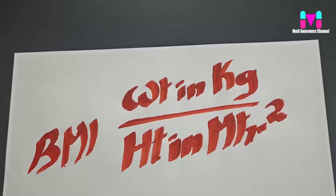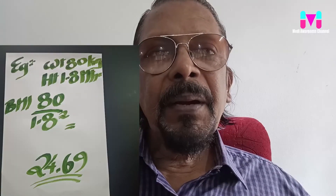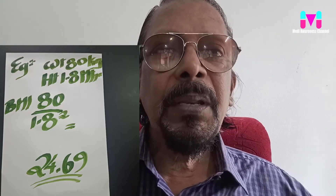The BMI formula is weight in kilograms divided by height in meters squared. For example, if the height is 180 centimetres, that is 1.8 meters, we square that value.